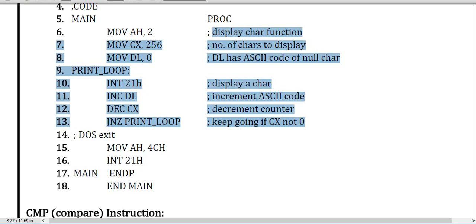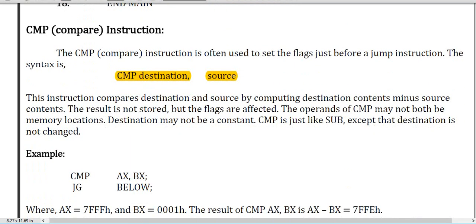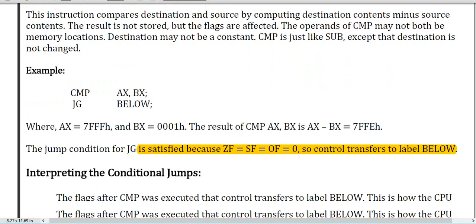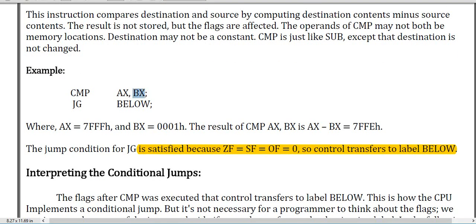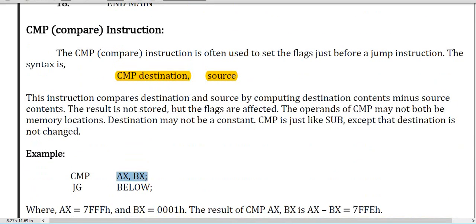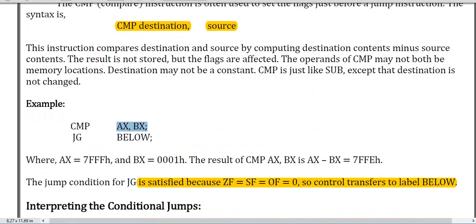Now the CMP instruction is for compare. In the compare instruction you have a destination and a source. Here BX holds the source value, suppose zero, and AX holds one. When you call CMP, it compares the values of BX and AX. If they match it sets one condition; if they don't match it sets another condition. That is how the compare instruction, denoted as CMP, works.